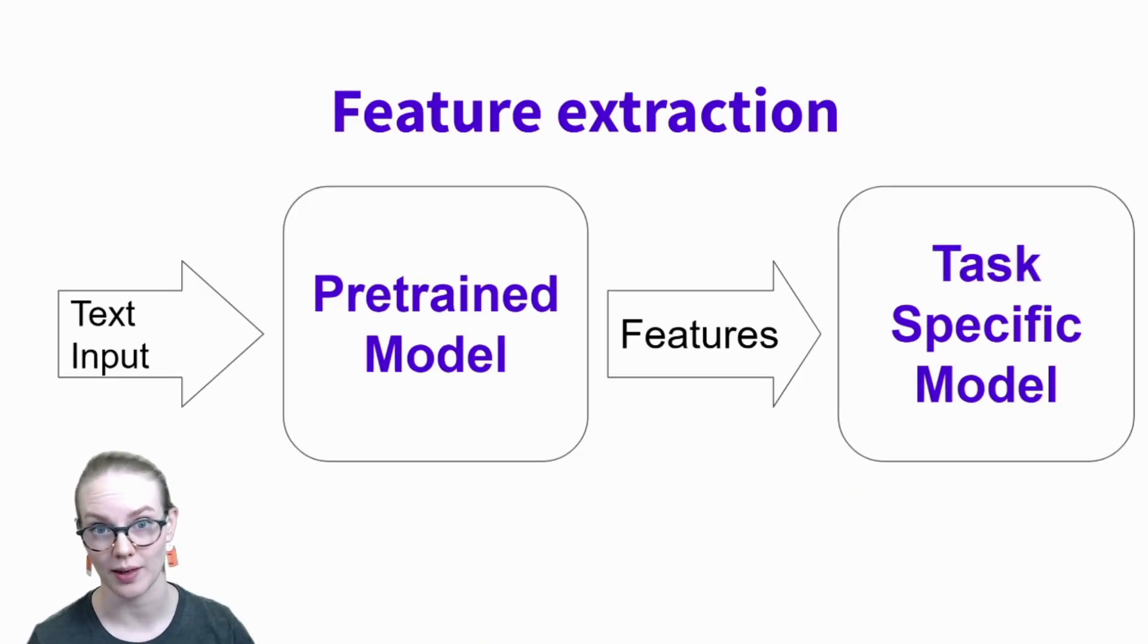There are two really common ways of doing this. The first is feature extraction. If you've been doing NLP, you've probably used this at some point. You have some text input, it goes through a pre-trained model or it might get features out of a pre-trained model, and then those features are used as input to a task-specific model.